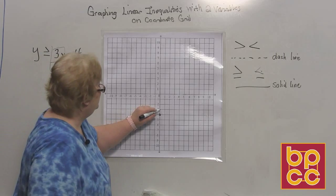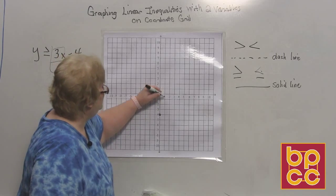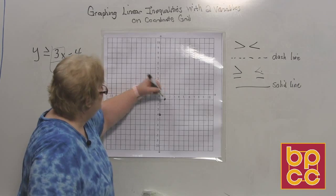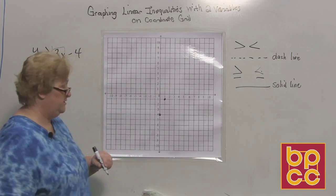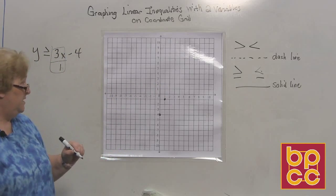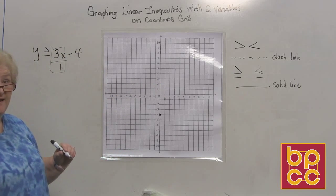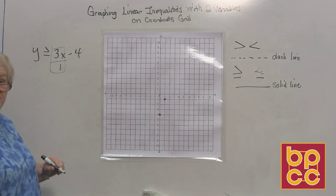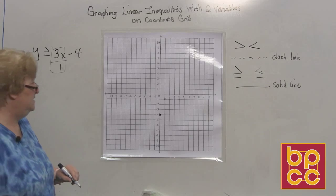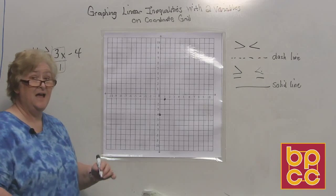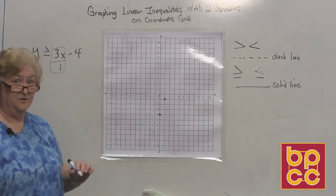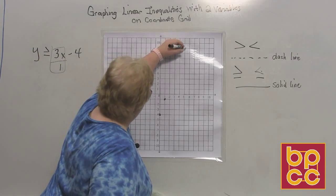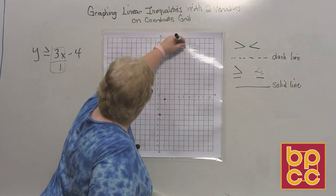Up 3 — 1, 2, 3 — and over 1. Now I'm getting ready to draw my line, but let's see what kind of line we need to draw. In this case it is going to be a solid line. So let's make a nice long line.